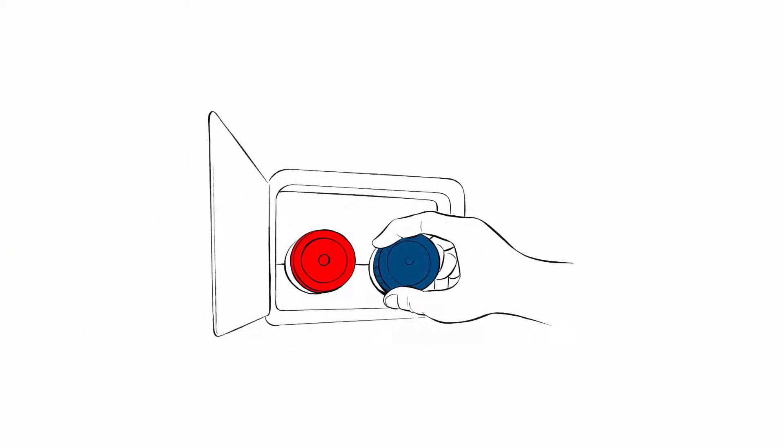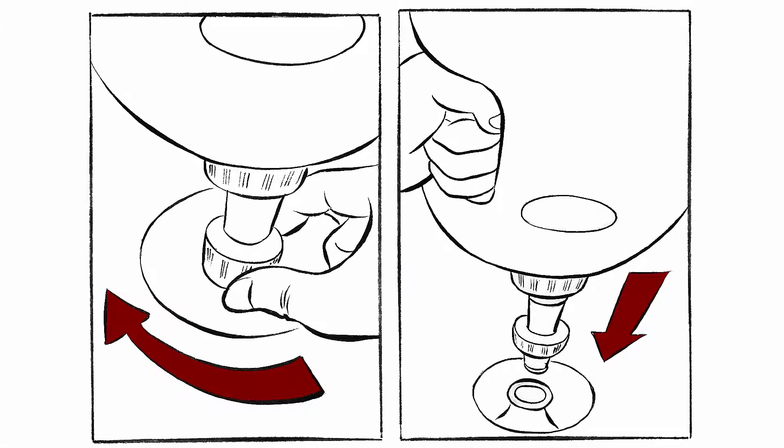Unscrew the cap of the car's AdBlue inlet. Insert the dispensing tool and screw the tool to the car's inlet. Make sure it is tightened correctly.